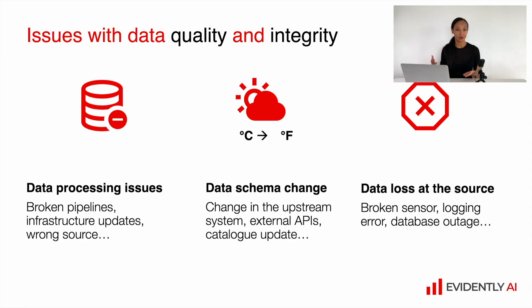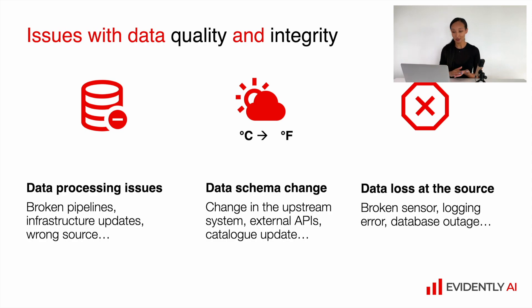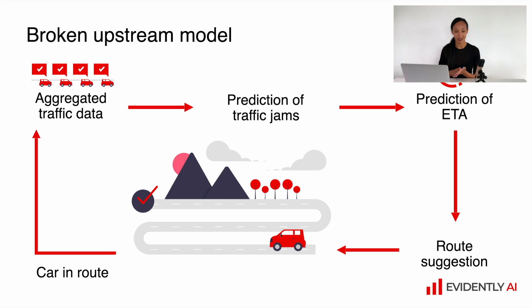It can be data processing issues like broken pipelines or some infrastructure update. It can be a data schema change, especially if you use some third-party APIs. Or your data can even be lost at the source, for example if you deal with broken sensors or maybe logging is implemented incorrectly. Even if our data engineers keep us safe and sound, there are still quite a lot of things which can affect our models in production.